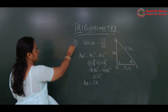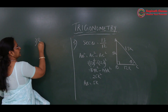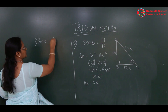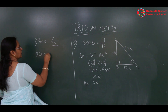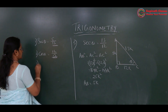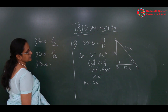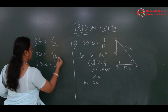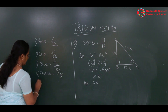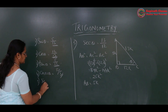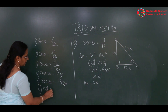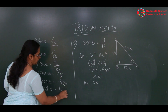Now we can write all the remaining ratios. Sin theta is opposite upon hypotenuse: 5k upon 13k, which is 5 upon 13. Cos theta is adjacent upon hypotenuse: 12 upon 13. Tan theta is opposite side by adjacent side: 5 upon 12. Cosec theta is 13 upon 5. Sec theta, which is already given, is 13 upon 12.